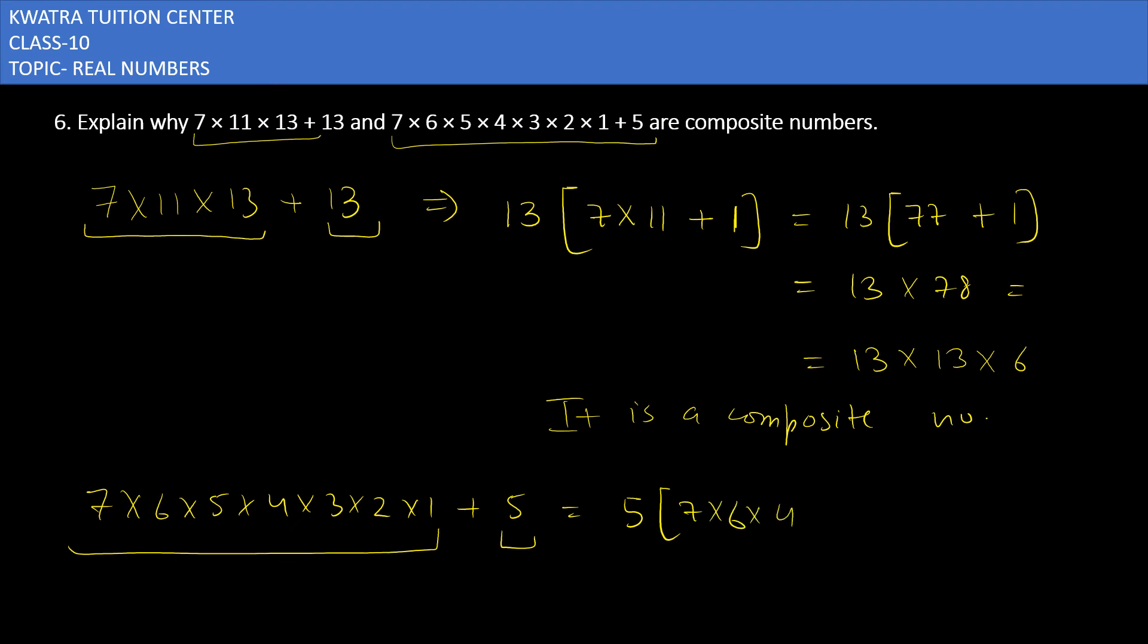And you have 7 into 6 into 4 into 3 into 2 into 1 plus 1. Now we have to multiply the number. This will give you 1008, so this will give you 1008 and then plus 1. So you have to get 5 into 1009. 1009 and 5, we know that each is one different factor, so yes again this is a composite number.